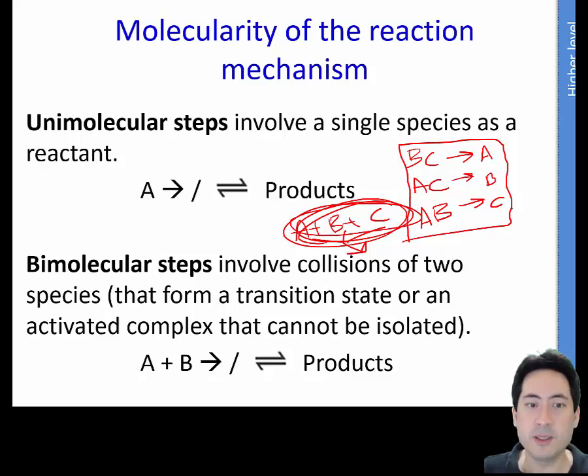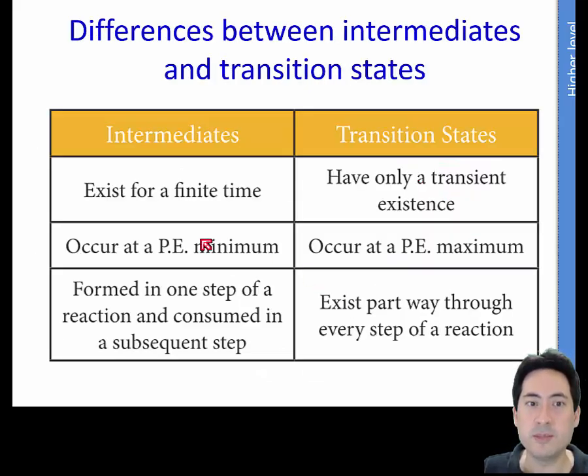Okay, so when these things form, they can either be in transition states or intermediates, as we've talked about before. Just a review of that. So intermediates have a minimum PE energy and can actually exist and be separated out, whereas transition states only occur theoretically really in an instantaneous point in time, and they instantaneously break up, and so they're at a maximum potential energy. They're very unstable.